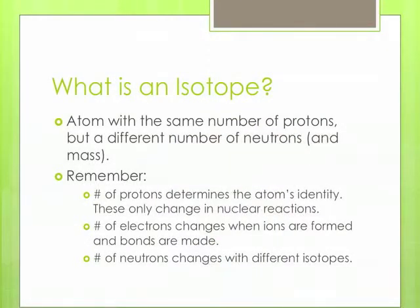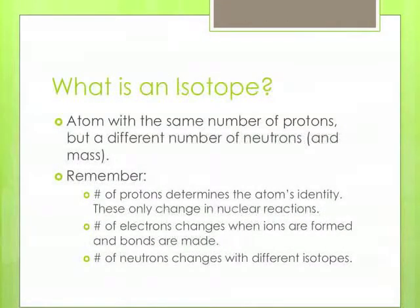But why is that number not a whole number? Because we said that one proton was one amu, and one neutron was another amu. But if you look at the periodic table, they're all decimals.